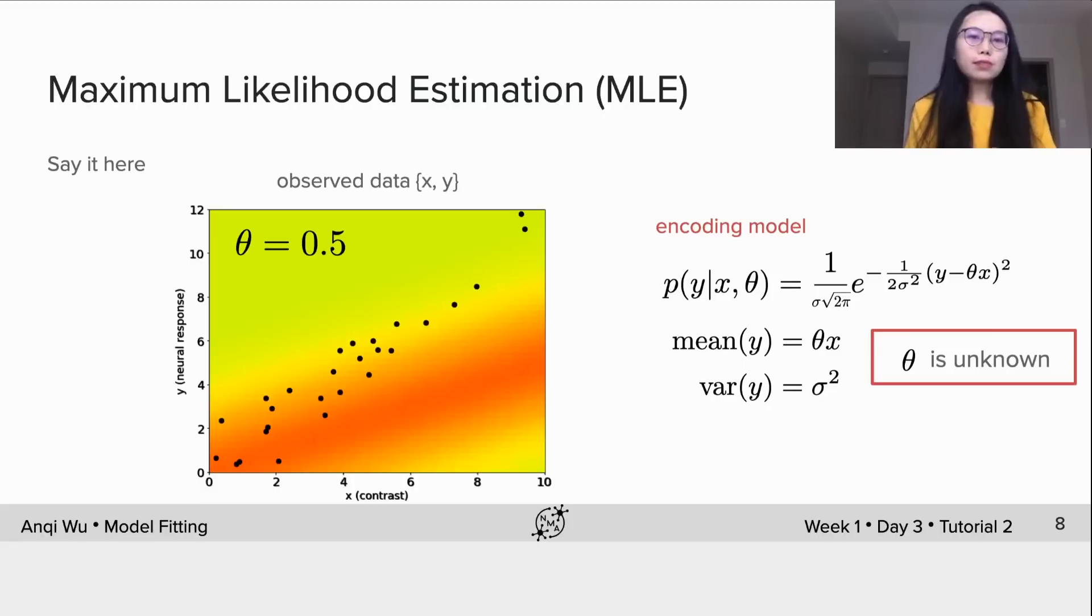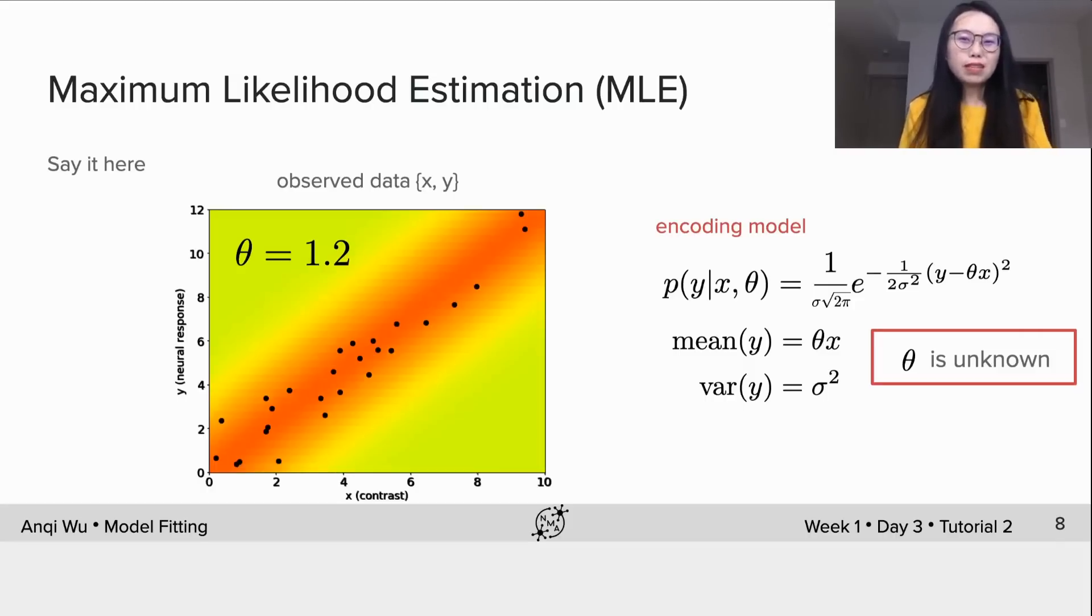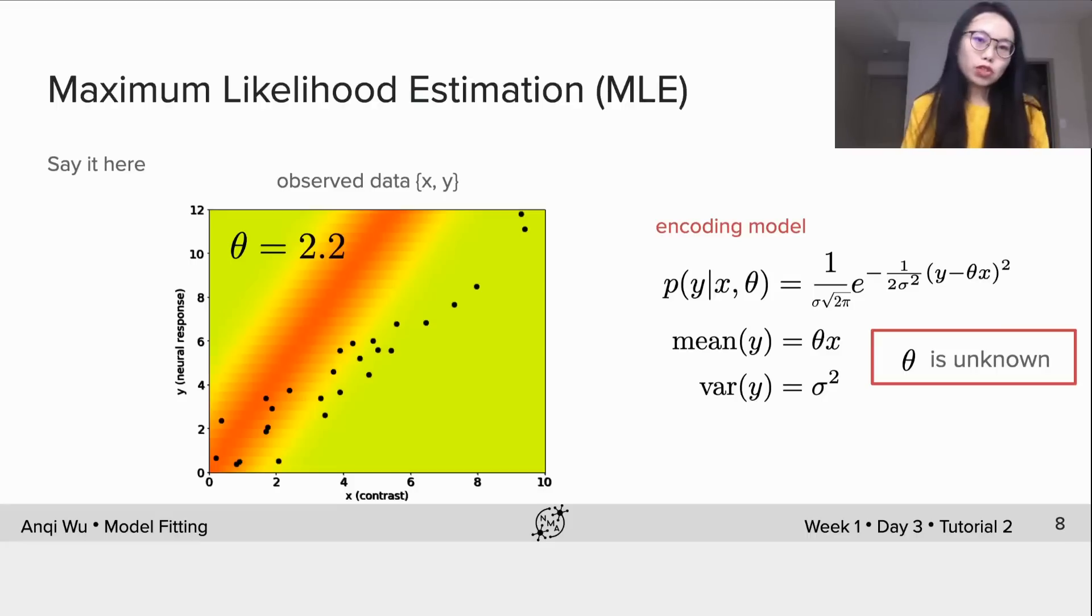If theta is 0.5, p(y|x, theta) looks like this. And if theta is 1.2, the distribution rotates, which seems to match the data better. And we keep increasing theta to be 2.2, the distribution further rotates up and misses the data again.